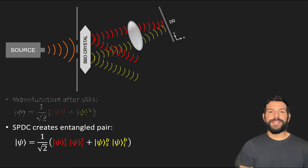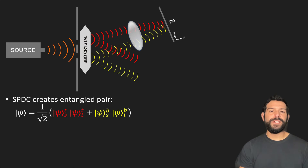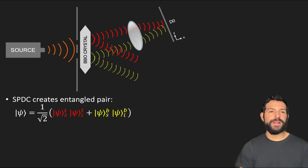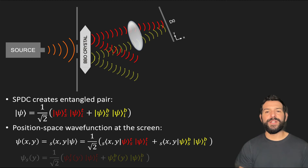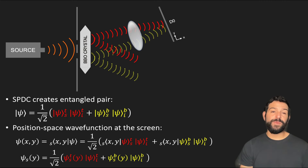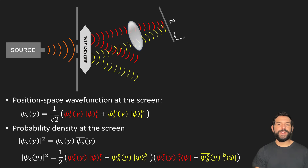The screen photon is then directed towards D0. We can find an expression for the global wave function right before reaching the screen by representing the screen photon's state in its position space basis, and then evaluating the x-coordinate at the location of the screen. And with this, we can compute the probability density of a photon hitting the screen by squaring the wave function.